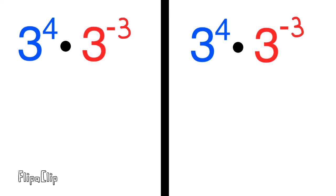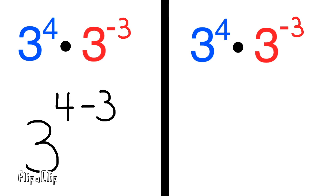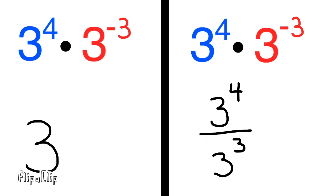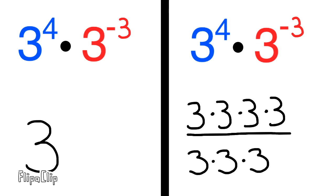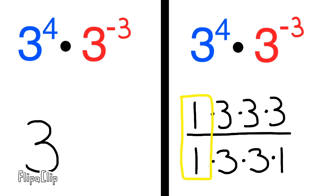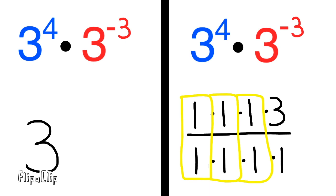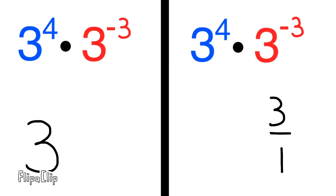Next, let's do three to the power of four times three to the negative three. The base number is the same, and we add the exponents — adding a negative three means four minus three is one. Three to the power of one is equal to three. On the right-hand side, the term with the positive exponent goes on top and the term with the negative exponent goes on the bottom with the exponent changed to a positive. The fraction reads three to the power of four divided by three to the power of three. Three to the power of four is three times three times three times three; three divided by three is one, three divided by three is one, three divided by three is one — all cancel out, leaving three over one. Three divided by one is three, the same as three to the power of one.